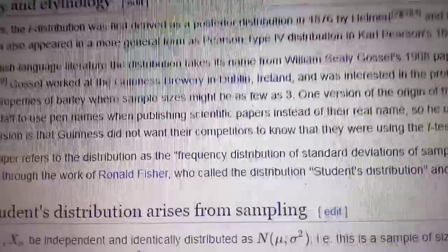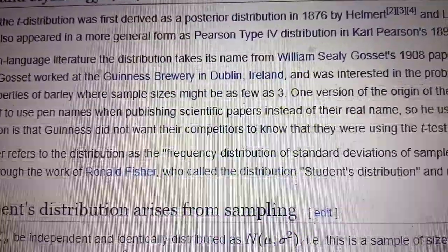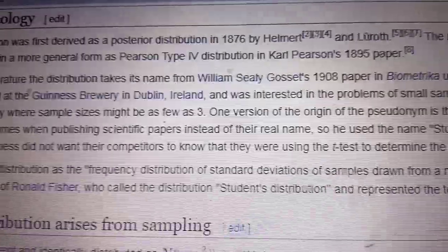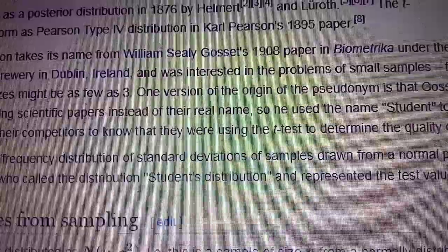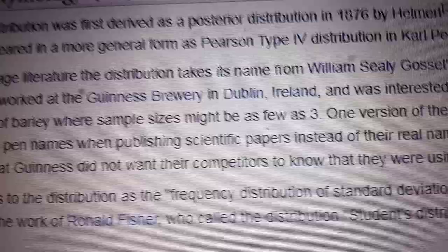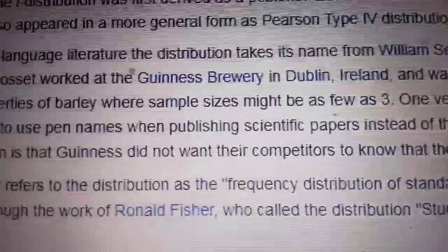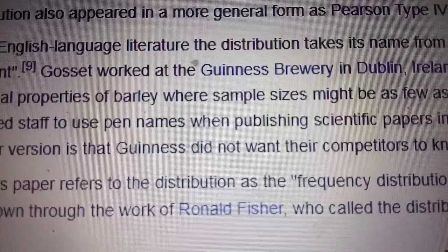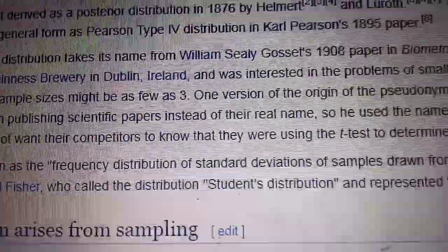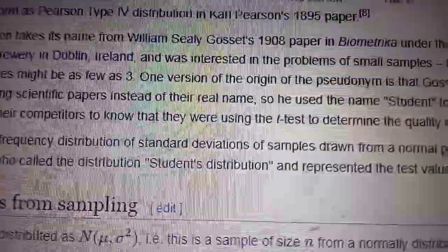This is why the distribution derived by him is called Student's t-distribution. He used to work in Guinness Brewery in Dublin, Ireland, and was interested in problems of small sample sizes. He was interested in finding the distribution of sample mean where the sample size is small, in properties of chemical properties of barley where the sample sizes might be as few as three.